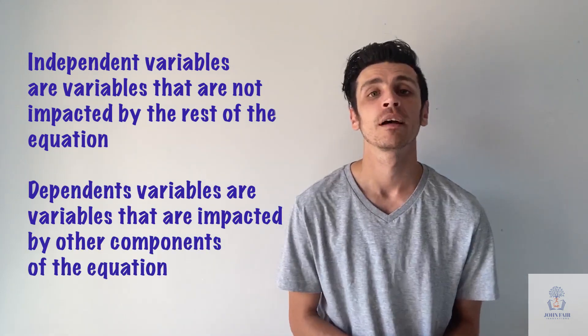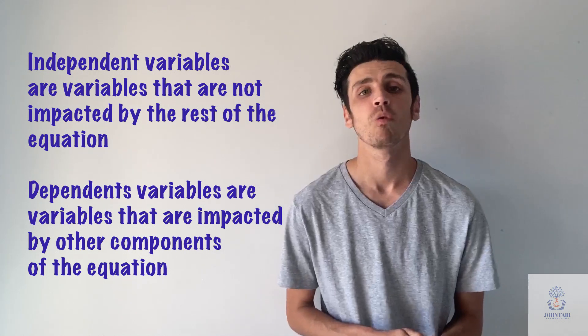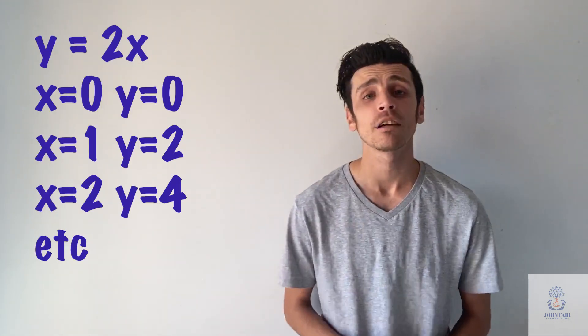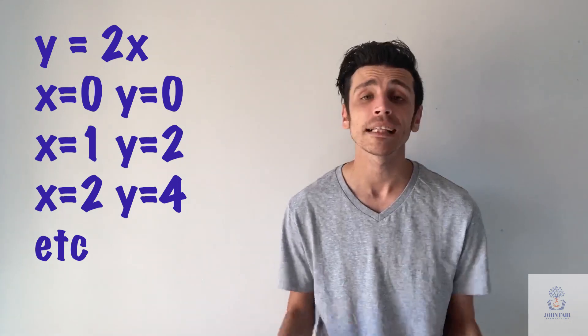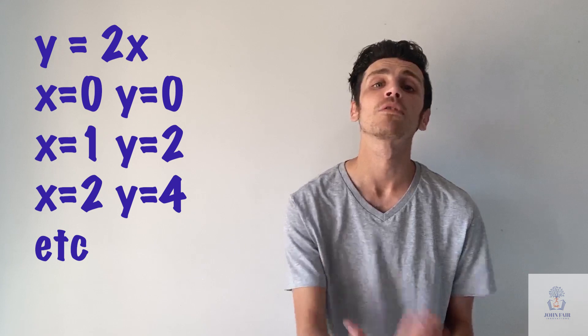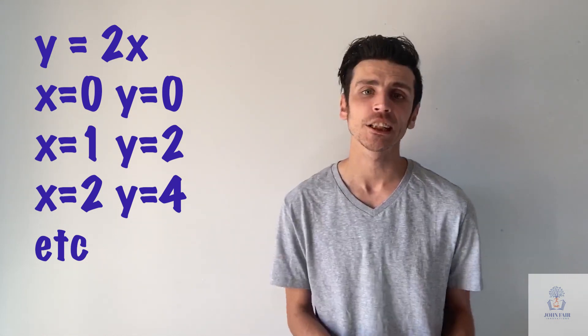Y however, in that formula, is considered dependent, because it does change depending on what x does. So say y equals 2x, if x is 0, then y is 0. If x equals 1, well 2 times 1 gives you 2, so y would equal 2. If x was 2, y would equal 4, and so on and so forth. But you see how y constantly changes depending on whatever x is doing. So that's why it's dependent on our x variable. It's a dependent variable.